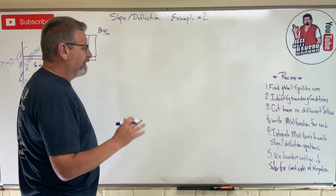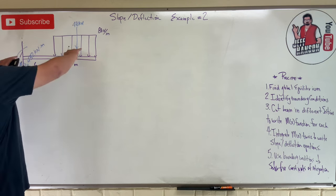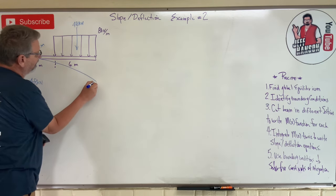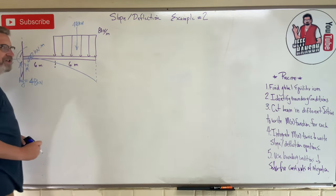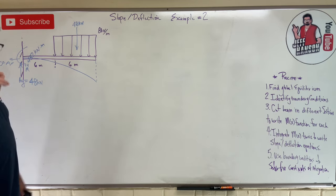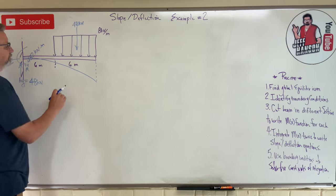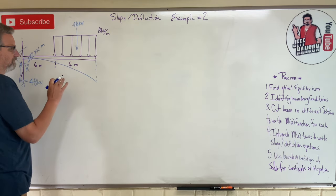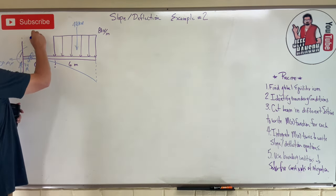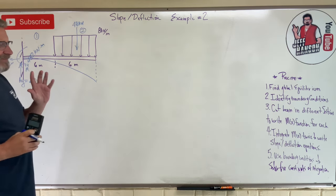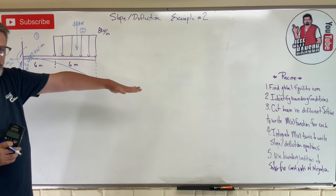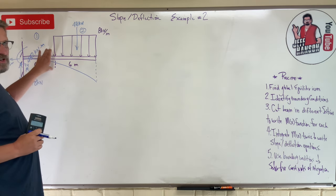Now let's identify boundary conditions. As the beam bends, it will be straight coming off the wall and then slowly dip down. There's some deflection at the end and also in the middle. I'm going to have two sections — section one and section two. It might actually be easier to skip to step three, cut the beam, write the moment functions, and then come back to the boundary conditions.